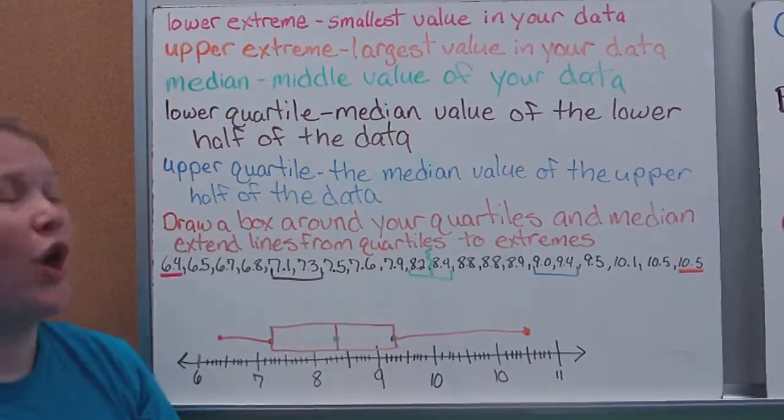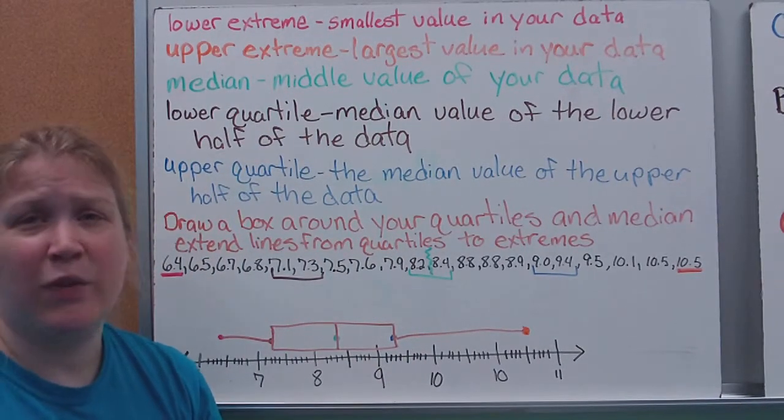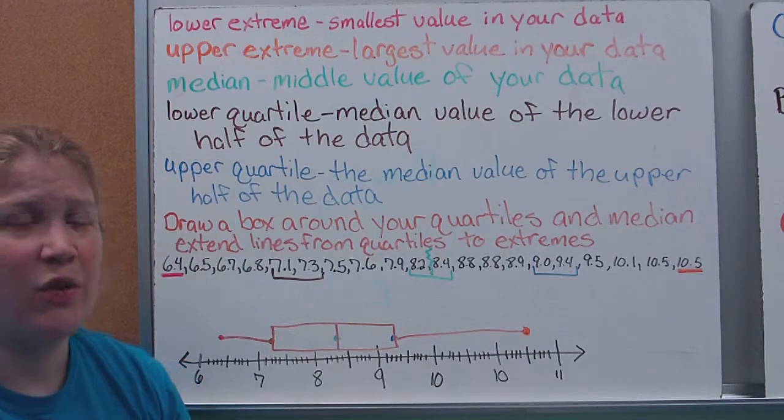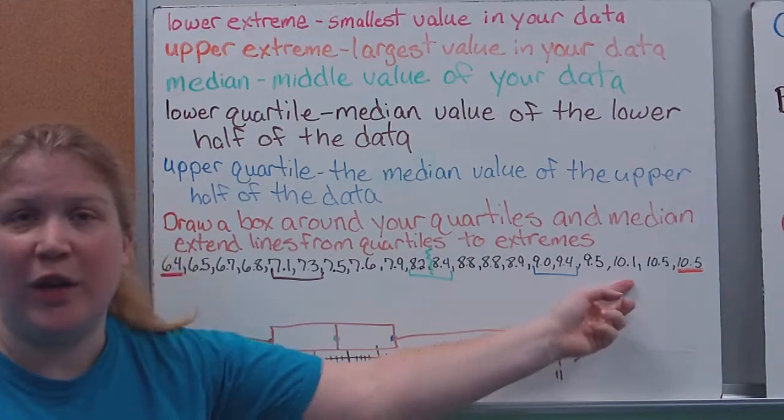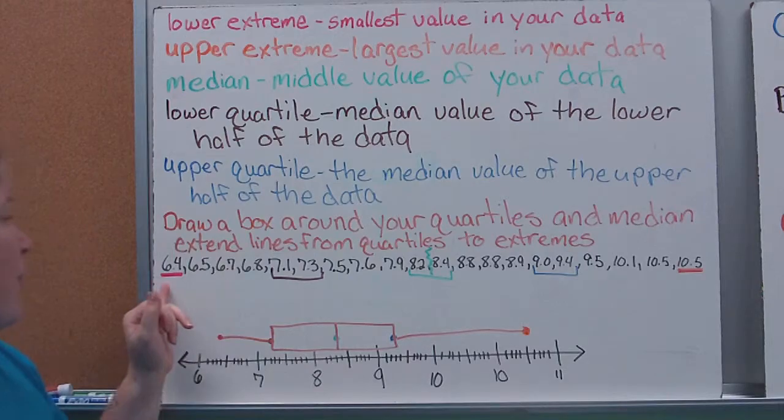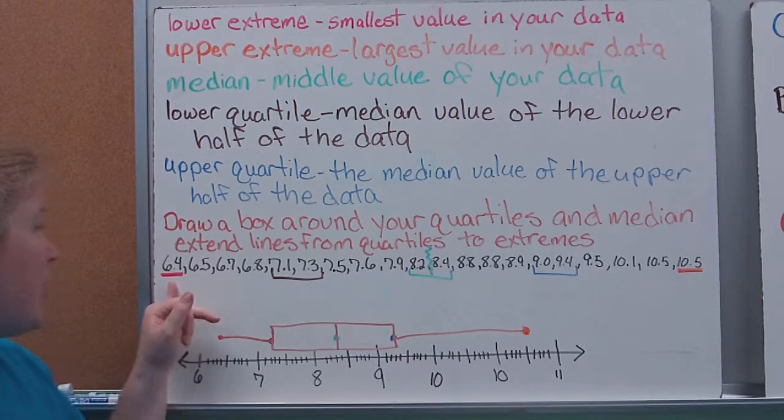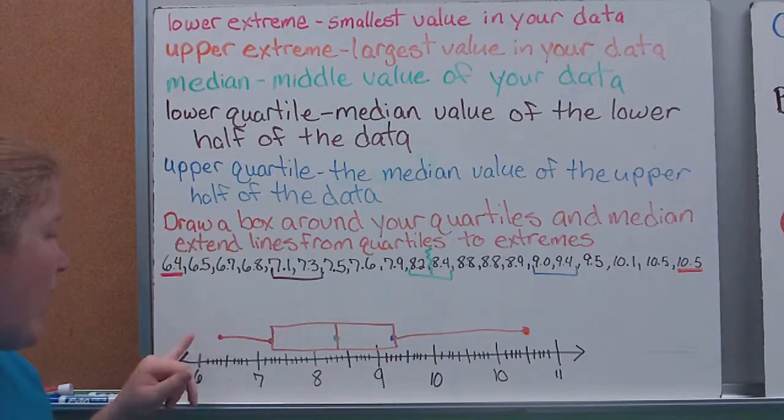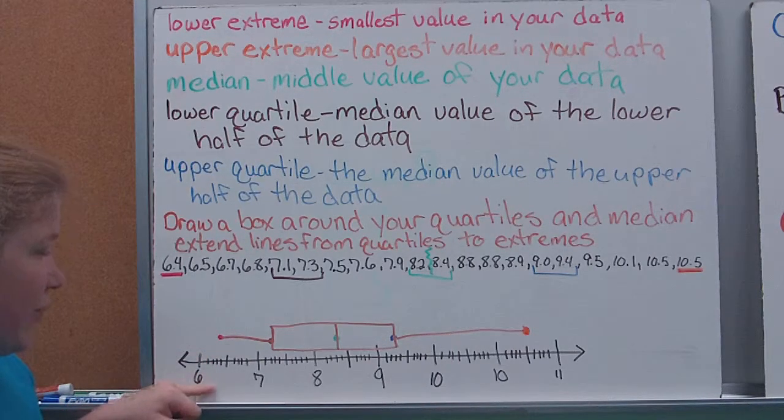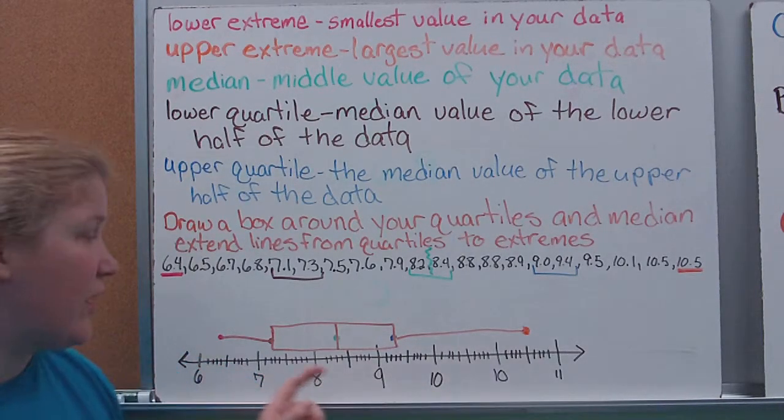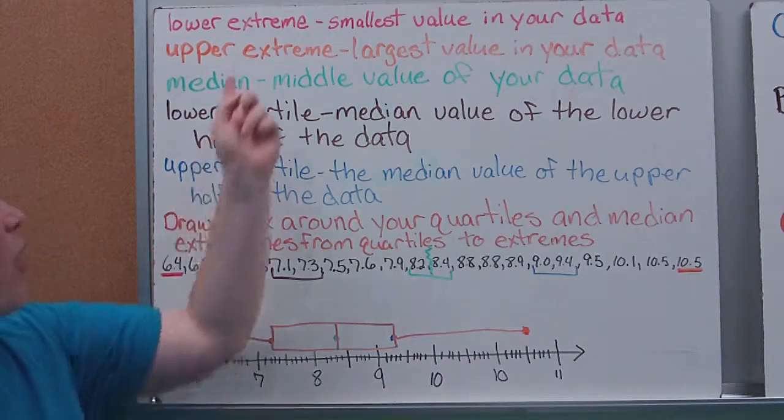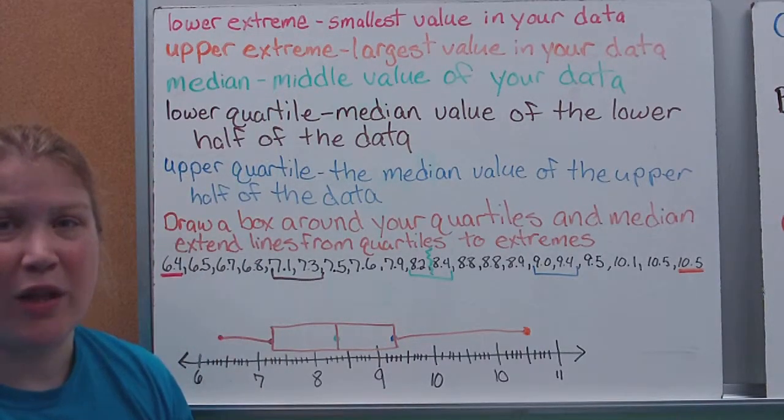So we have what we call our lower extreme, and again, it's what it sounds like. It's the lowest value of your data. Now, this is already put in numerical order for you. So I've marked in red, like the definition, the 6.4, which is our lowest value, and then I put a dot above 6.4 on my number line down here. So there's the red dot marking our lower extreme, our smallest value.